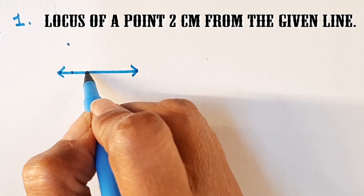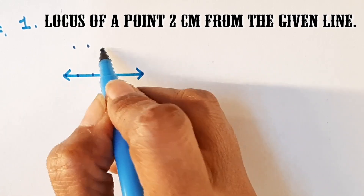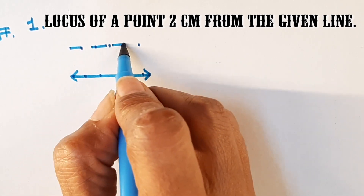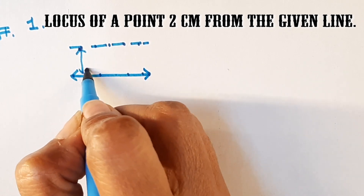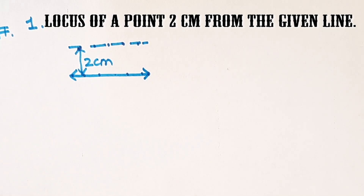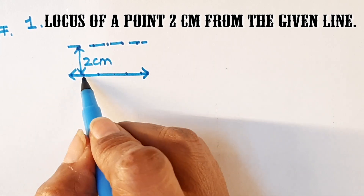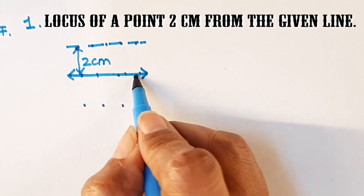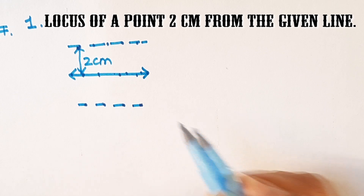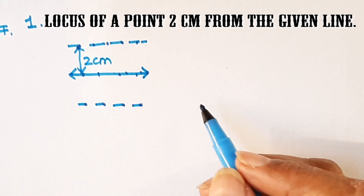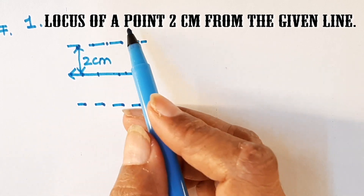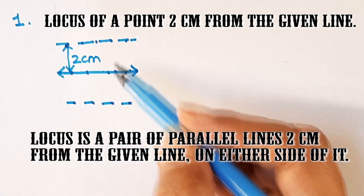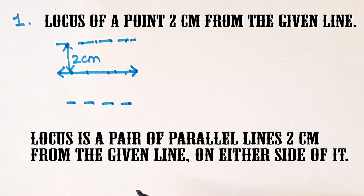Let us say this is 2 cm. We look at the perpendicular distance of the point, so the point can move like so. And if you look at its path, you will see that it gives us a line which is 2 cm away from this given line. This line could be on the lower side as well, so if we take 2 cm on either side, we get another parallel line. So we say that the locus of the point 2 cm from the given line will be a pair of parallel lines on either side of the line at a distance of 2 cm from it.